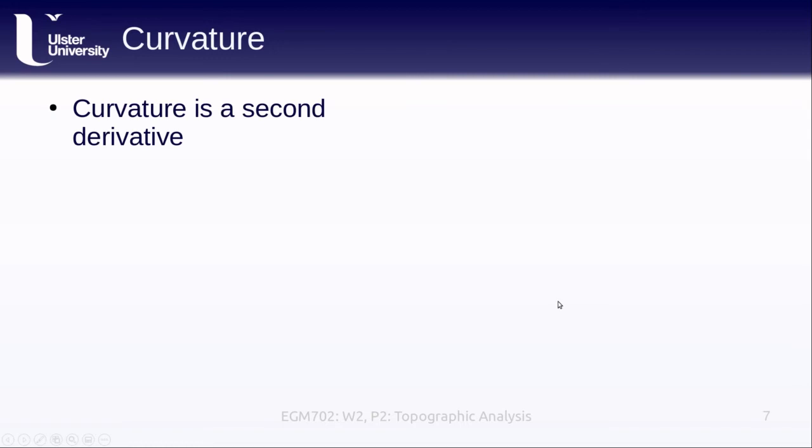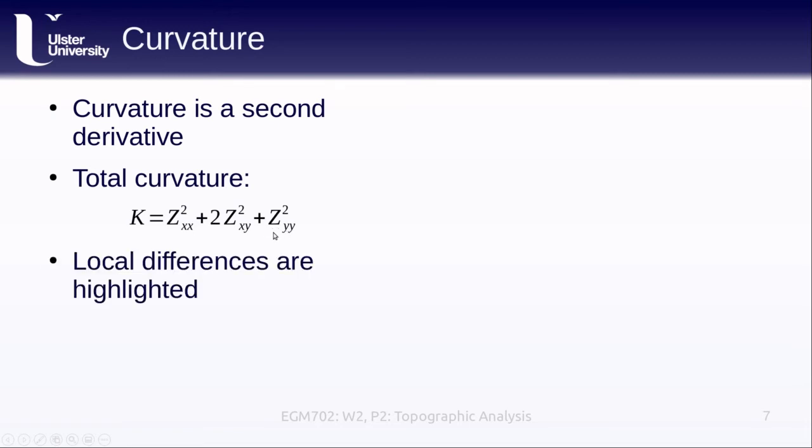Curvature is a second derivative. We can calculate the total curvature of the surface as the sum of the different second derivatives. So it's the square of the second x derivative, the square of each of the xy derivatives multiplied by 2, and the square of the second y derivative as well.